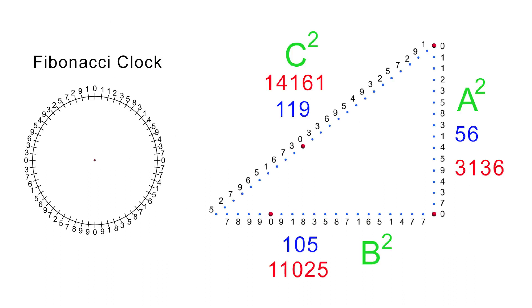When I add up the values of the three sides I get: a equals 56, b equals 105, and c equals 119. When I square these values I get: a equals 3136, b equals 11025, and c equals 14161. Incredibly, using the Fibonacci clock to create a right-angled triangle, the sum of a squared plus b squared is equal to c squared. The Fibonacci clock is using waves of time to create what we call the physical world.